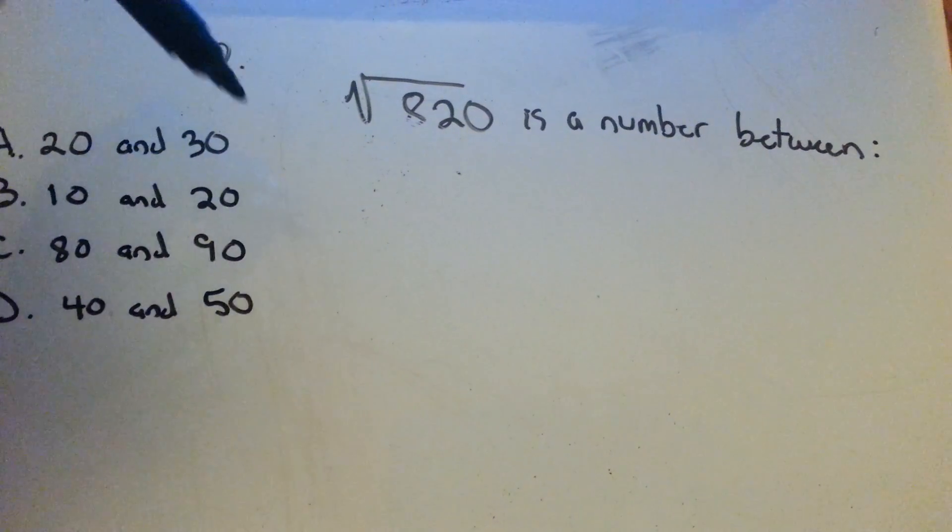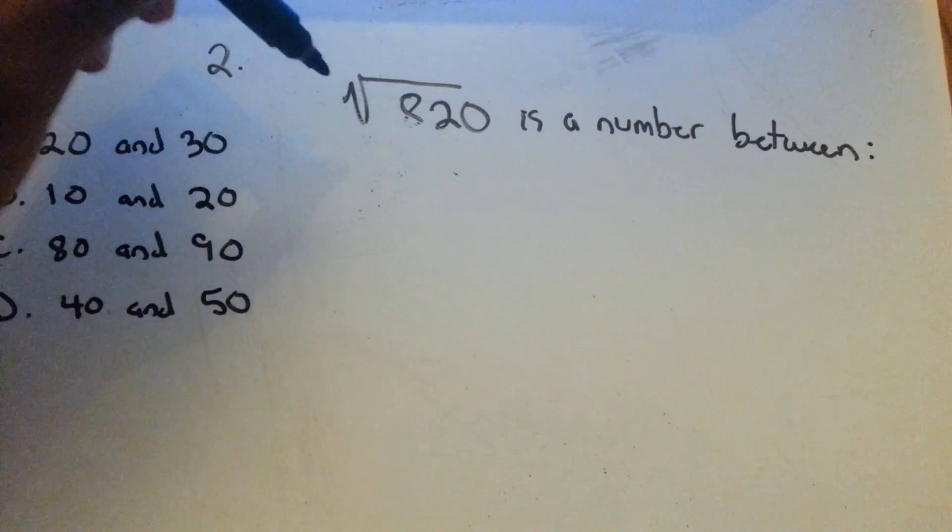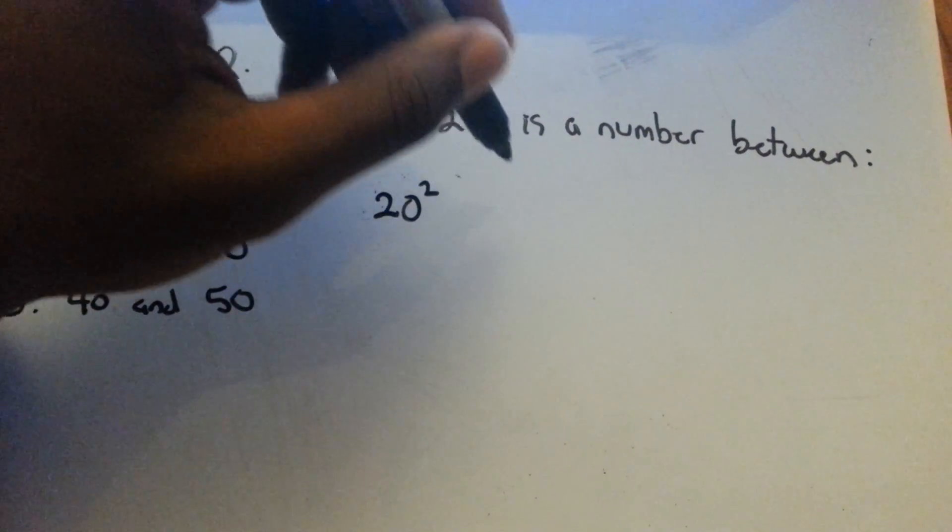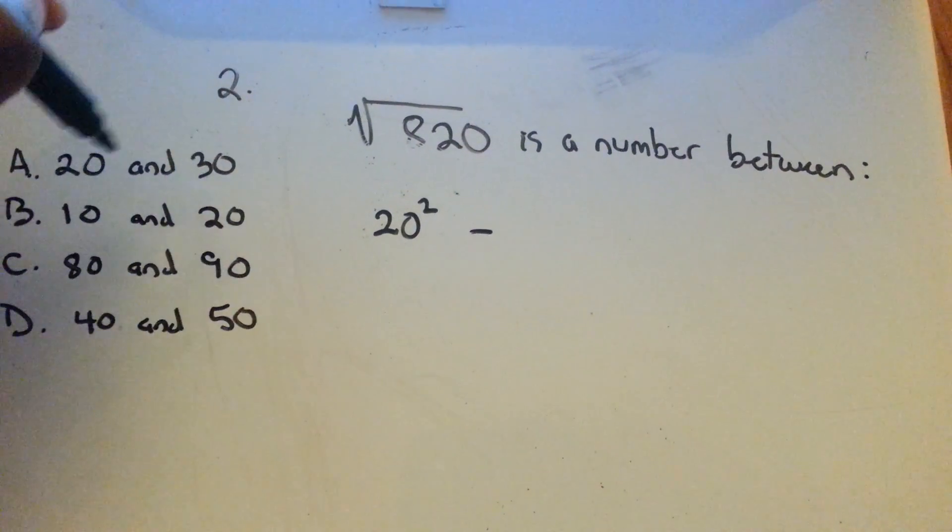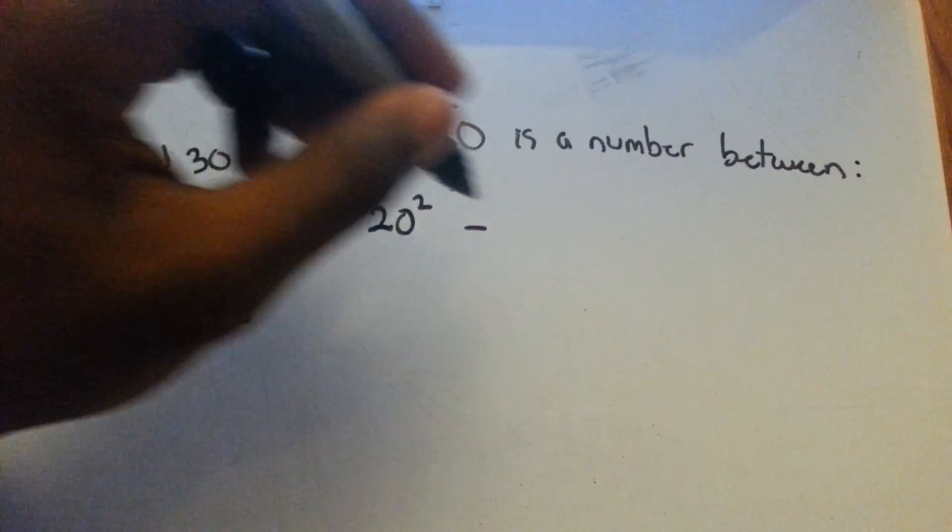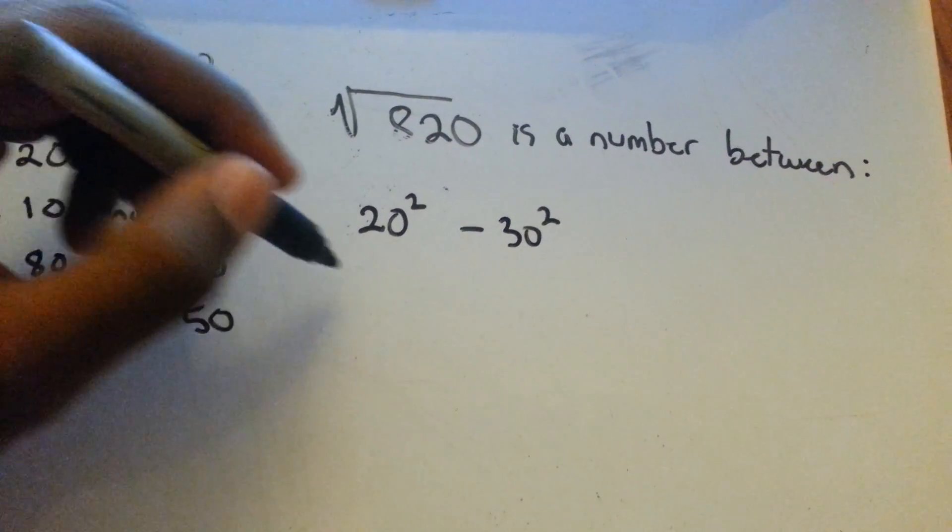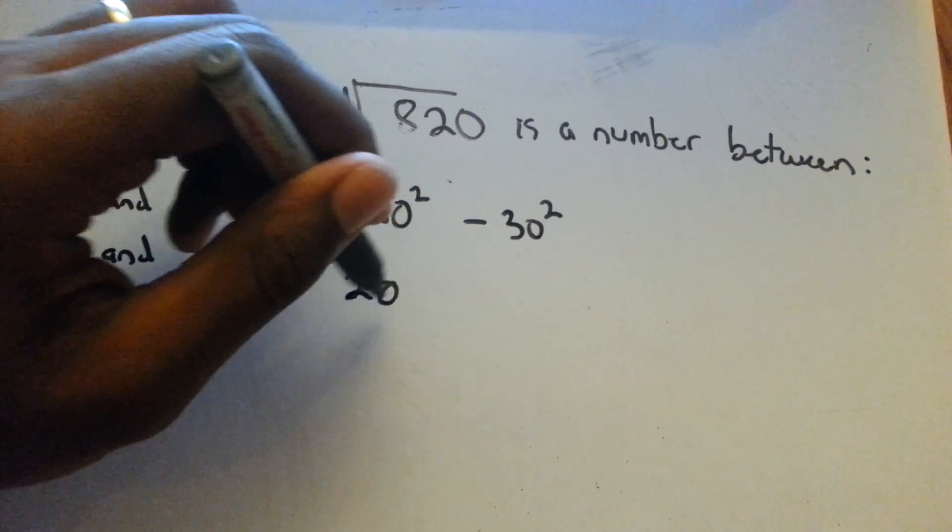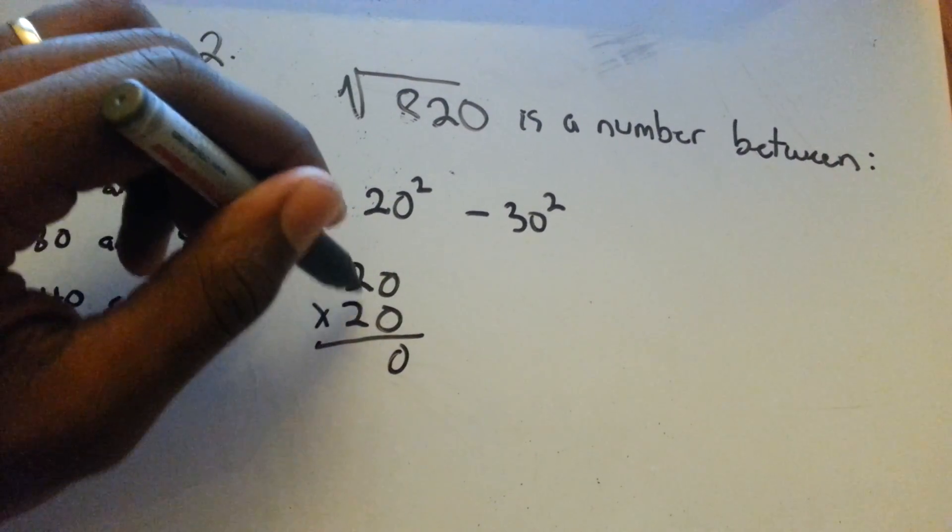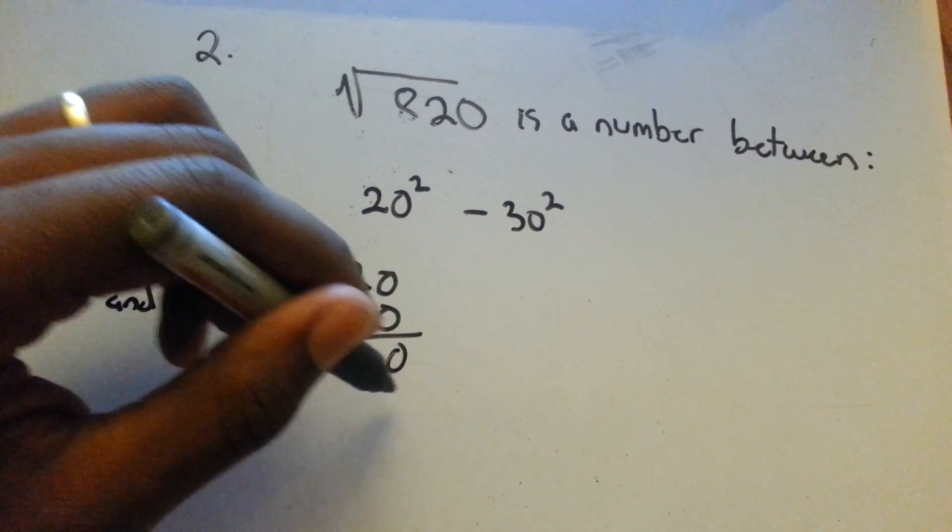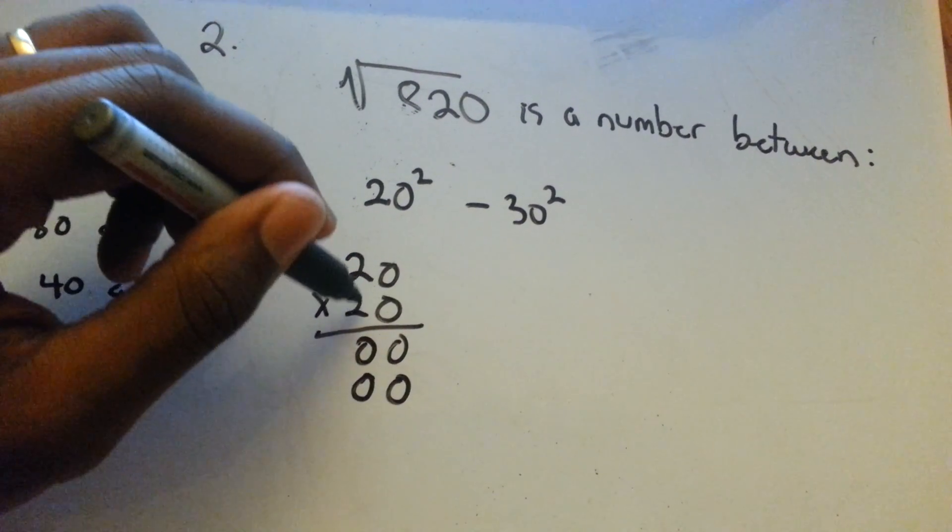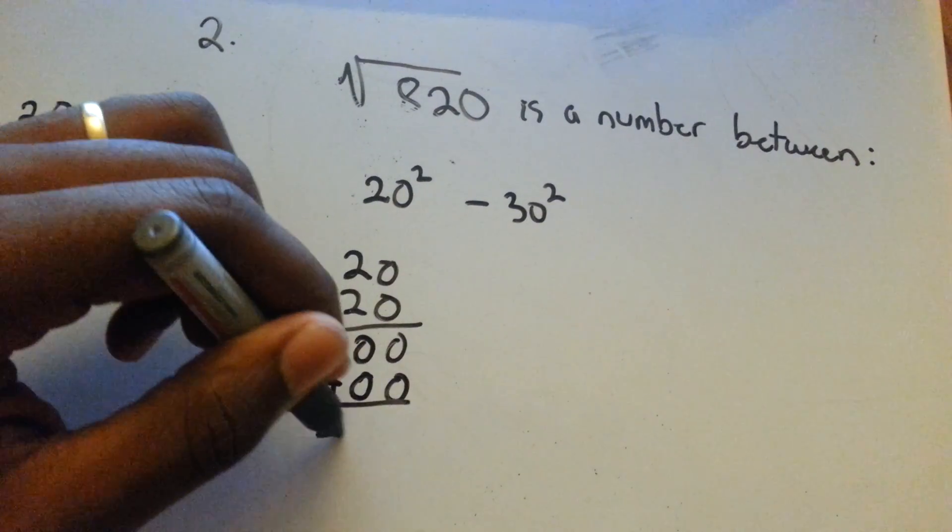So I'll just start off with the first one here and do 20 squared, and we want to find out if 820 is between 20 squared and 30 squared. So we do 20 times 20 - that's 2 times 2 is 4, so that's 400.